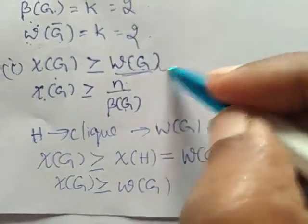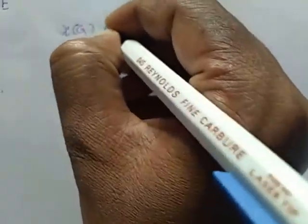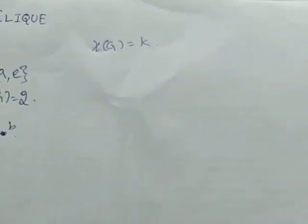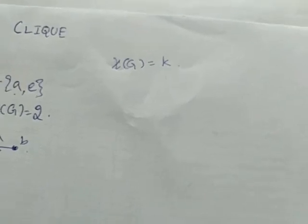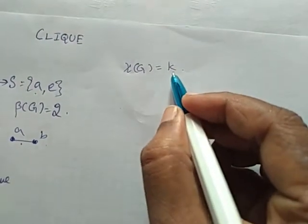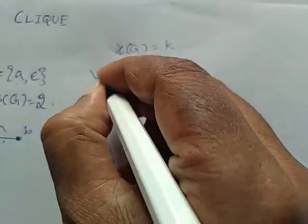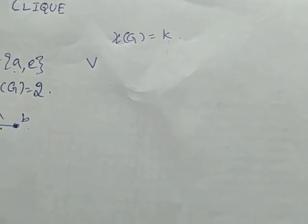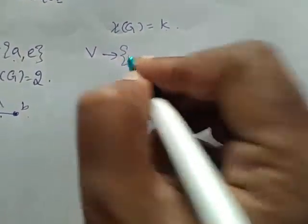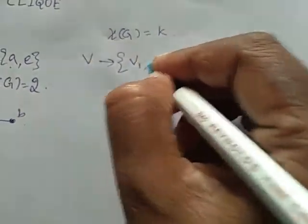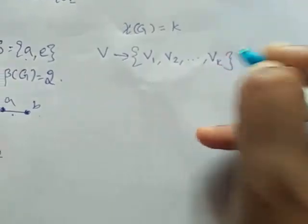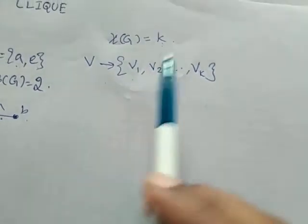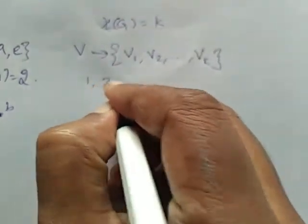Now we are going to prove the second result. Suppose the chromatic number for G is K, meaning we require K colors to color graph G. The vertex set V of graph G can be divided into K independent sets V1, V2, ..., VK. Vertices colored with the first color are collectively represented by V1, those with the second color by V2, and so on through VK. Since these vertices are not adjacent to each other, V1, V2, ..., VK are independent sets.